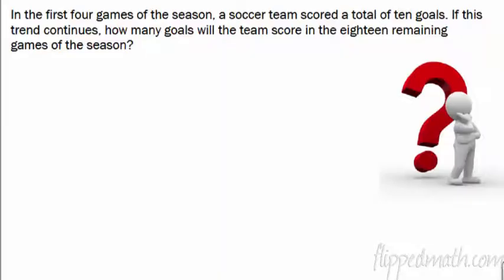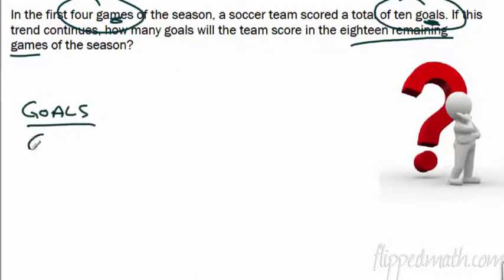All right, so let's look at the next part. Don't pause the video there. In the first four games of the season, a soccer team scored a total of 10 goals. All right, so I'm going to 10 goals. That's important. If this trend continues, how many goals will the team score in the 18 remaining games of the season? All right, so in the first four games, so what are we comparing here? We're comparing goals and games. So, so many goals per game. So let's write that out. Goals and how many games?